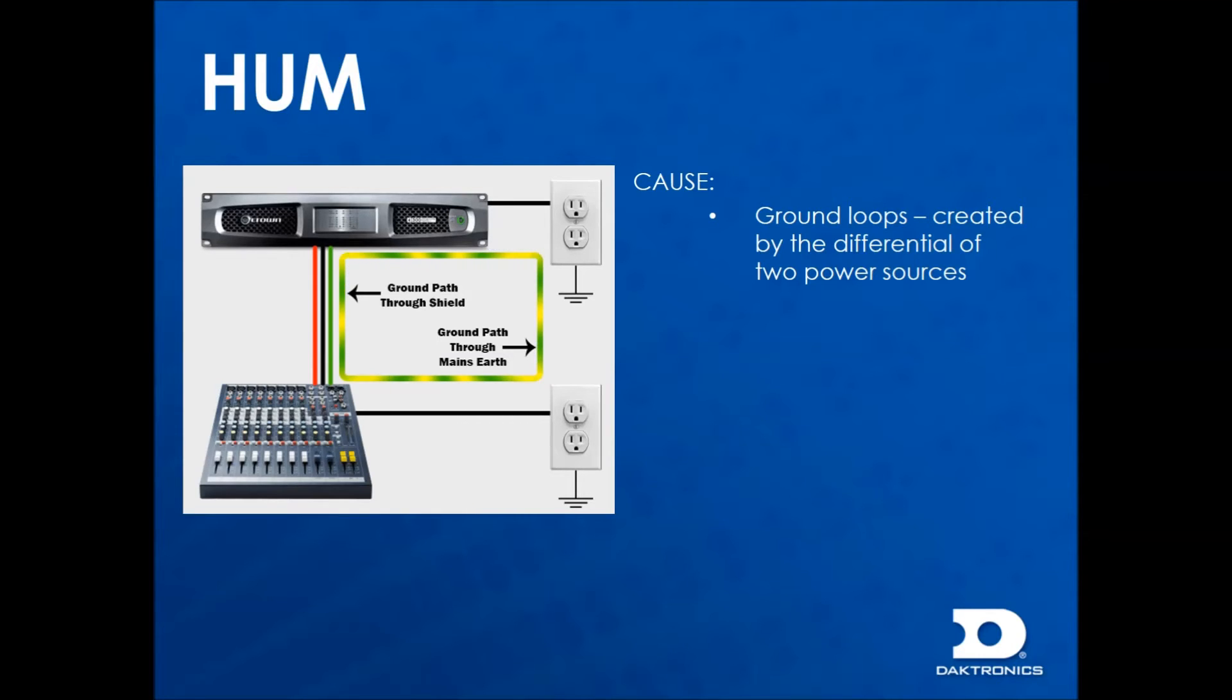Ground loops are created by the differential of two power sources. The graphic shows the equipment attached to two circuits both tied to earth ground. Due to potential differences and having two separate earth ground points, some current will flow on the equipment ground and induce a 60Hz hum.